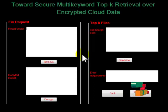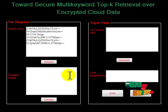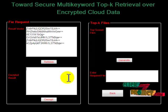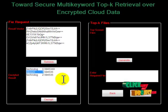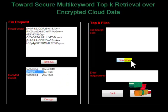The result vector is then sent to the user. The user decrypts the result vector, and the decrypted results are shown as the corresponding keywords and their relevance scores. The user then applies the top-K ranking algorithm to find the top-most files.